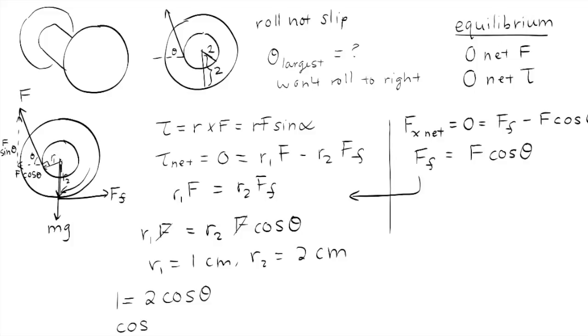And for what theta is cosine of theta equal to 1 half? Well, that theta is going to be 60 degrees. So we say that the largest value of theta for which it will not roll to the right, aka stay in equilibrium, is 60 degrees.